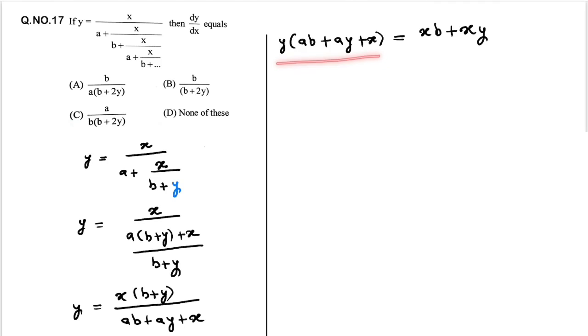So if you multiply y here then we will get this: aby plus ay squared plus xy.